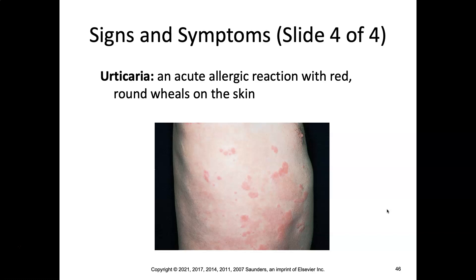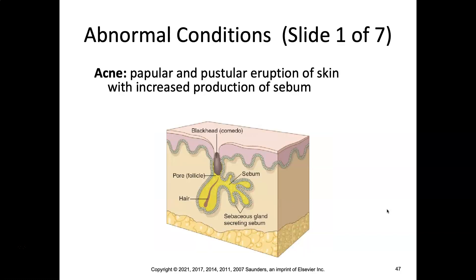Urticaria is an allergic reaction with red, round wheals on the skin. If you've ever had an allergic reaction and gotten hives, that's a type of urticaria. Acne — you may have gone through a stage struggling with acne. These are papular and pustular eruptions of the skin with increased production of sebum, way too much oil, causing lots of problems.